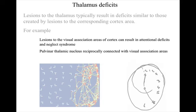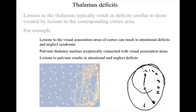Now the pulvinar nucleus is reciprocally connected with these visual association areas. And damage to the pulvinar nucleus results in deficits that are very similar to those caused by visual area damage.